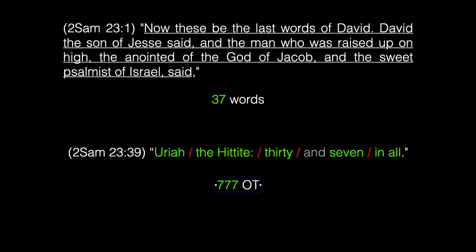Let's go to 2 Samuel 23:1. 'Now these be the last words of David. David the son of Jesse said, and the man who was raised upon high, the anointed of the God of Jacob, and the sweet psalmist of Israel said' — the opening verse of this chapter contains exactly 37 words. Now let's look at the final verse, 2 Samuel 23:39: 'Uriah the Hittite — 30 and 7 in all.' There were 37 mighty men of David.